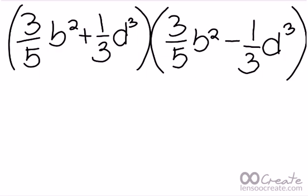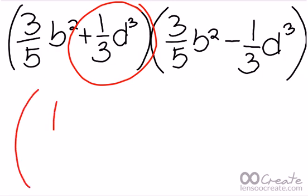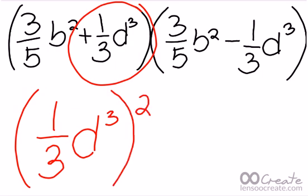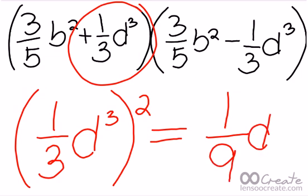And then you square the second term which is 1 third d cubed. You will end up with 1 ninth d raised to the 6th power.